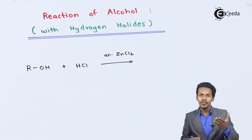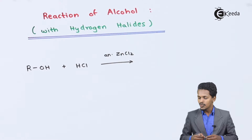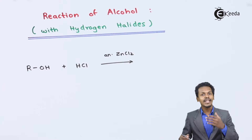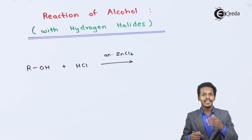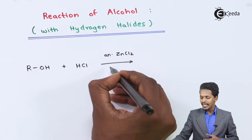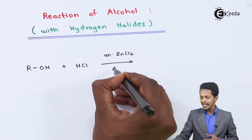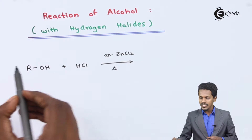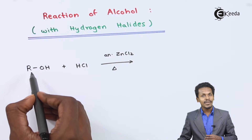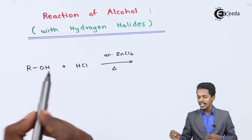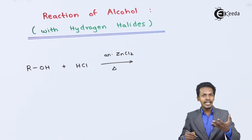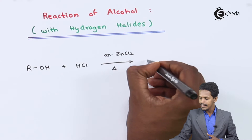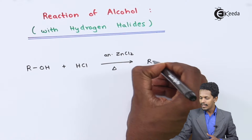Anhydrous ZnCl2 acts like a Lewis acid. The combination of anhydrous ZnCl2 along with HCl is basically known as Lucas reagent. We also have to provide a certain temperature. For a primary alcohol, using anhydrous ZnCl2, the product we get is RCl, that is an alkyl chloride.